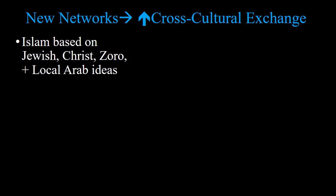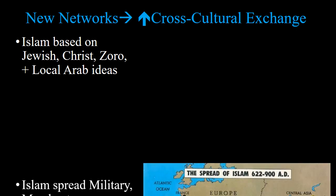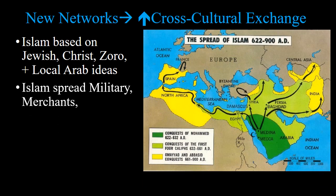New networks lead to an increase in cross-cultural exchange. You get this new religion, Islam, based on older Arab religions, Judaism, Christianity, and Zoroastrianism mixed together. It spreads through the three M's: military conquest, merchant economic activity, and later missionary activities with Sufi Muslims. For the most part, unlike Christianity and Buddhism, we don't see as much missionary activity in Islam.